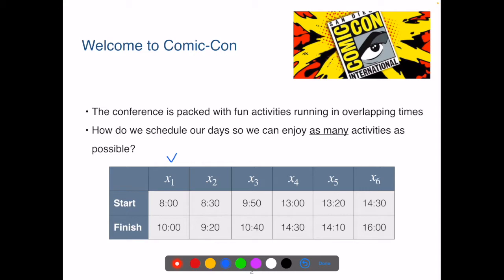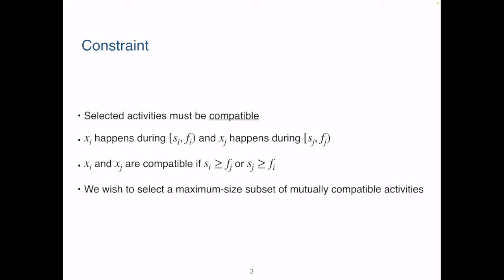This is clearly an optimization problem where we want to maximize the number of mutually compatible activities we can attend on a day. For instance, in this example here, we can choose X1, X4, X6, or we can choose X2, X3, X4, and X6. Both sets consist of mutually compatible activities. Now let's get a more clear picture on the constraints of this problem.